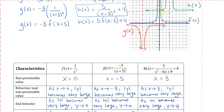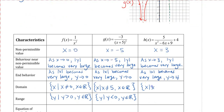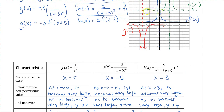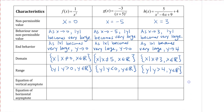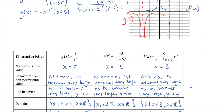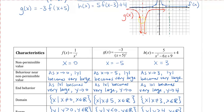For the green graph, the domain is all real numbers such that x ≠ 3. The y-values must be above the horizontal asymptote at y = 4, so the range is y > 4. Also noting a correction: for the g(x) domain, x cannot equal negative 5 — that should be negative 5, not positive 5.